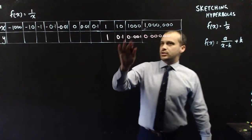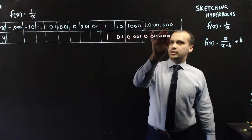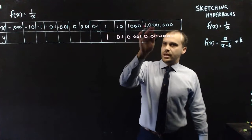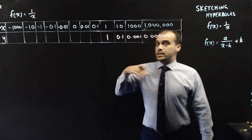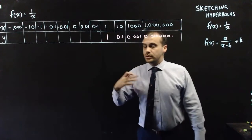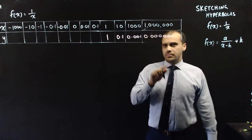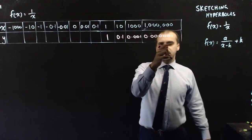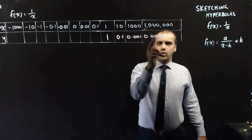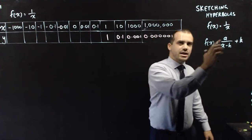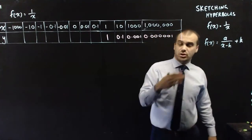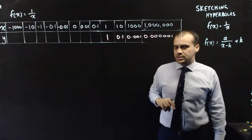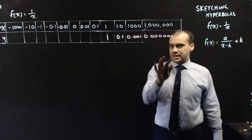You can see that no matter how large the x values are, our y values are getting smaller and smaller and smaller. But our y values will always be some number — they're never going to be exactly 0. That's cool.